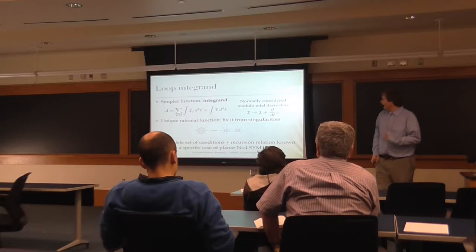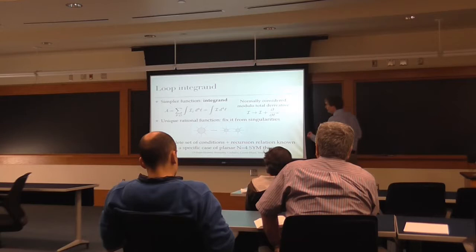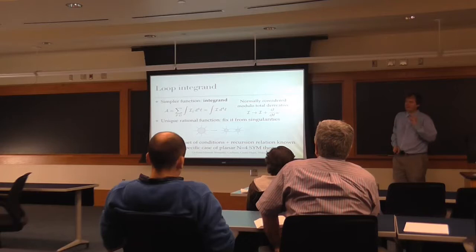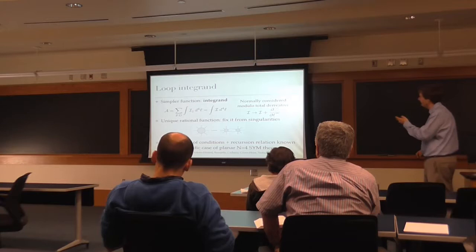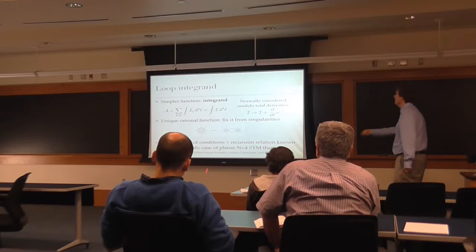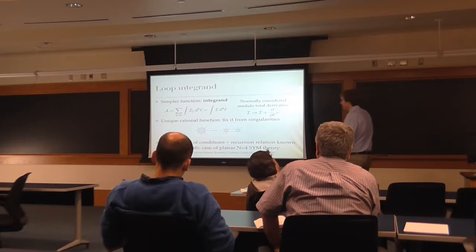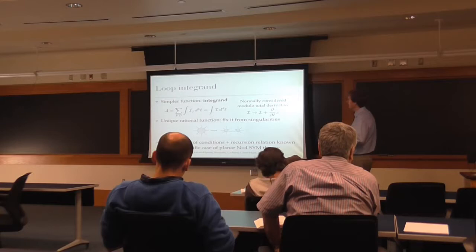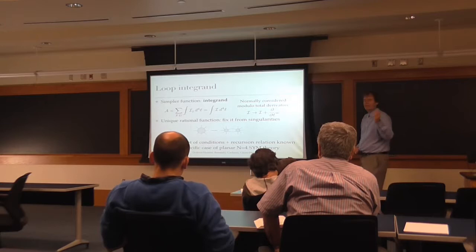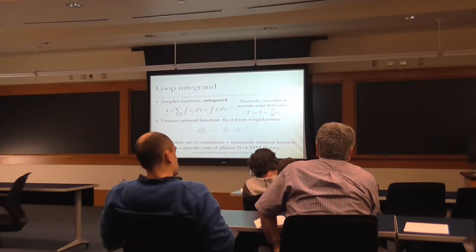In one special case — planar N=4 super Yang-Mills — we can actually use this picture fully. It's our simplest four-dimensional interacting quantum field theory where we can find new recursive structures. We actually found recursive relations similar to BCFW for the loop integrand: just knowing its singularities, you are able to reconstruct it completely. This also means there are no poles at infinity in our recursion formula.